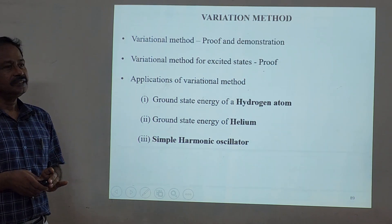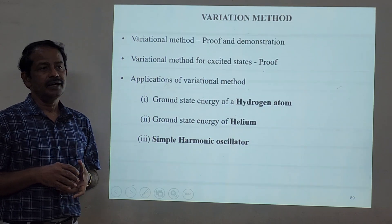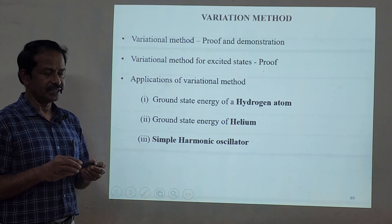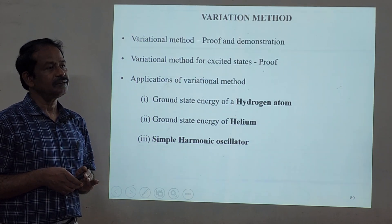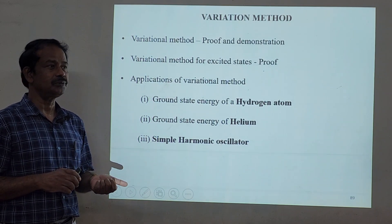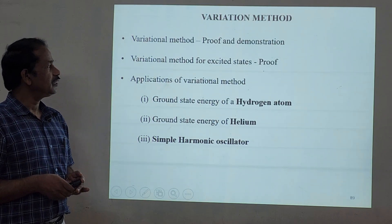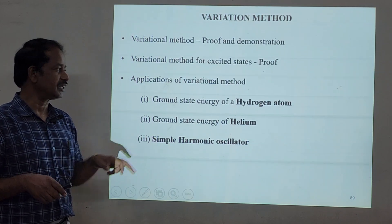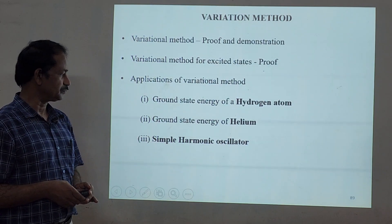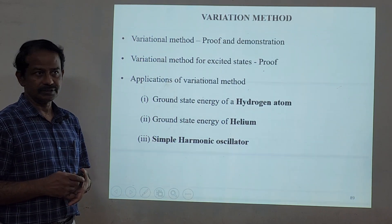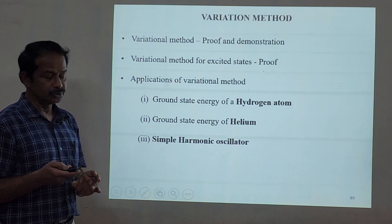Good morning students. In the last class we discussed the variation method. We used the variation principle to calculate energy eigenvalues and wave functions by guessing the trial wave function. The calculated value is very close to the experimental true value. We have mainly three applications for your syllabus: ground state energy of the hydrogen atom, helium atom, and the simple harmonic oscillator.